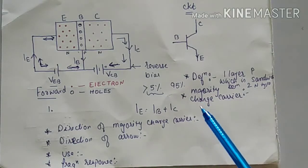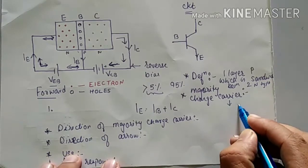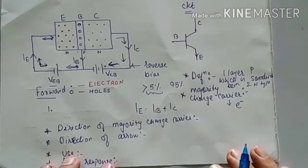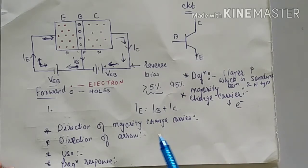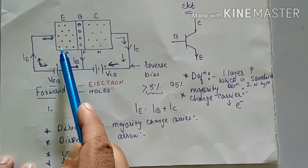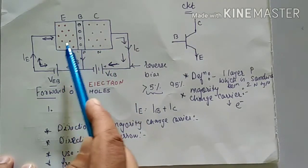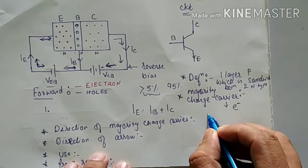Now, what is the majority charge carrier in NPN transistor? We know that the majority charge carrier in N type is electron, so the majority charge carrier in NPN will be electron. The third point is the direction of the majority charge carrier. Since the majority charge carrier is electron, and the electron flow is from emitter to collector, the direction of the majority charge carrier is from emitter to collector.